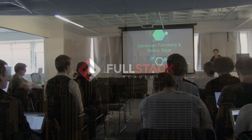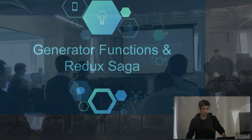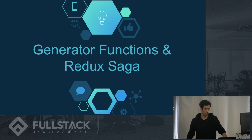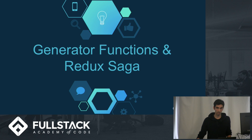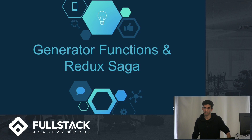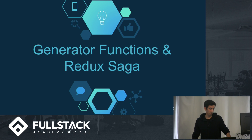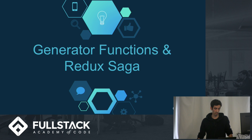Hey, what's up, everyone? I'm Omer Nadeem, and today I'll be talking to you about generator functions and Redux Saga. Redux Saga is a middleware that's used in Redux to help us get a cleaner, more asynchronous-looking style of code, and it's based on an ES6 feature called generator functions.